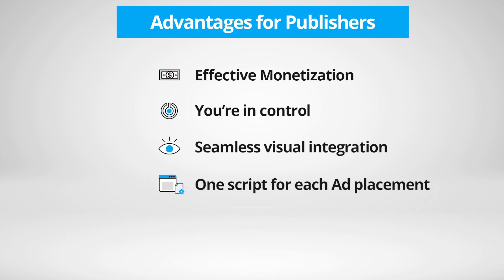One script for each ad placement — simply place the ad zone script in your ad placement, just like you do with any standard ad zone. A/B testing — test different native ads against each other to see which one performs better.